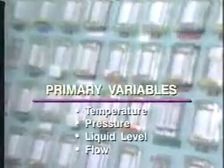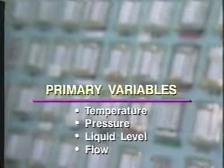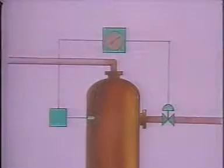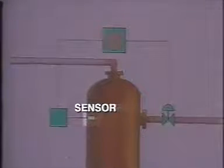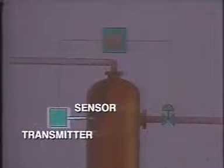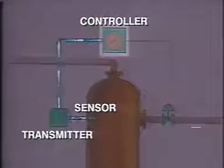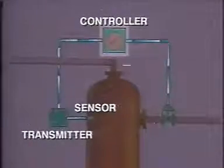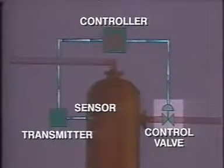There are four major variables or process conditions that must be controlled in any distillation process: temperature, pressure, liquid level, and flow. Suppose we want to control the temperature at the top of a distillation column. The first thing we need is a measuring instrument that can sense the temperature. Next, a transmitter interprets this measurement information and sends a signal to a controller. The controller is programmed to maintain tower top temperature at a desired value called set point. If the temperature has deviated from set point, the controller sends a signal to a valve telling it either to open or close. This changes the reflux rate to the top of the tower and brings the temperature back to set point.